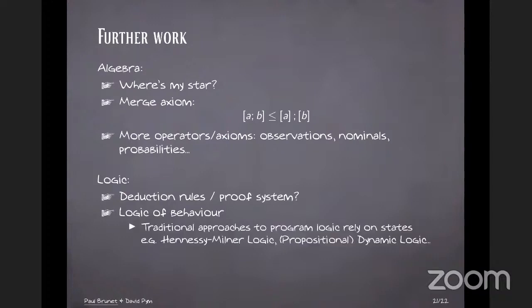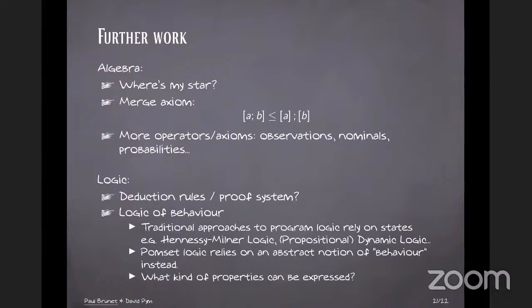And another more conceptual thing is that this logic is somewhat unusual. So usually, logics that deal with program logics rely on some concept of states. So the existence of a path between a state satisfying this to a state satisfying this, or sometimes directly a relational thing between various memory states. And here it's directly, it talks about the behavior, the events that occur and the ordering between them. So the question we have right now is, what kind of properties can be expressed with this? And that's all I wanted to say. Thank you.